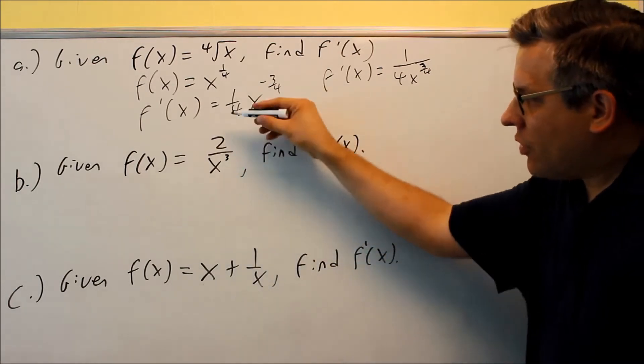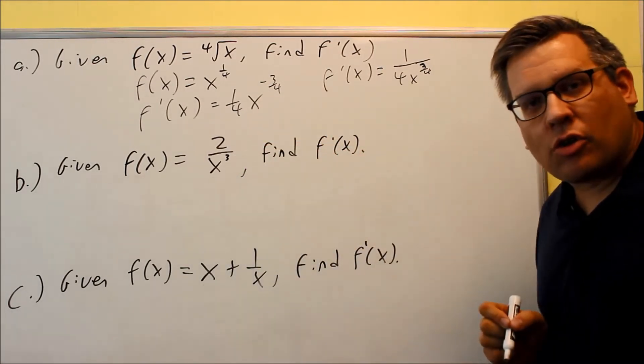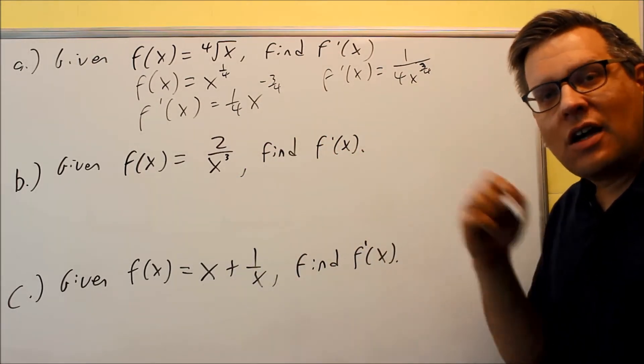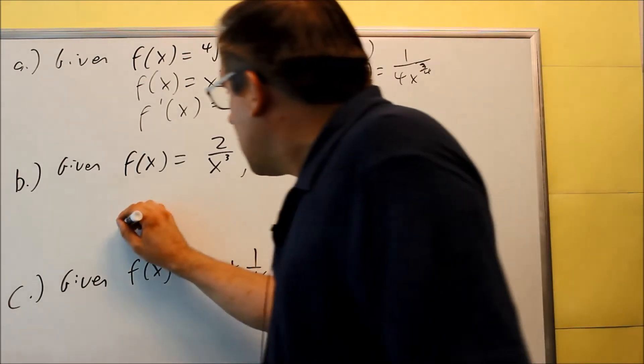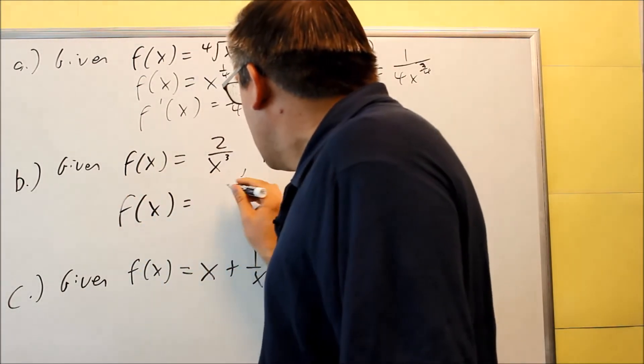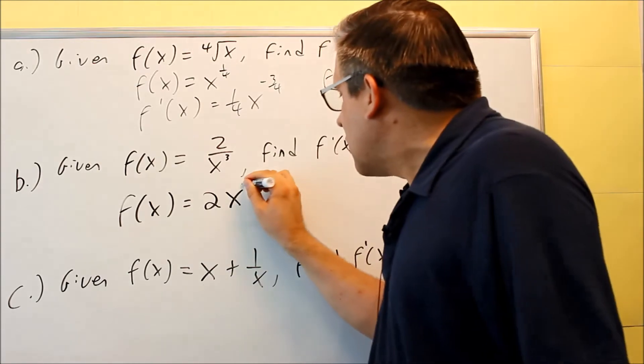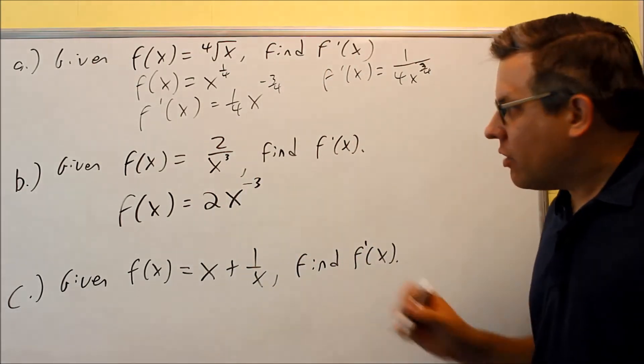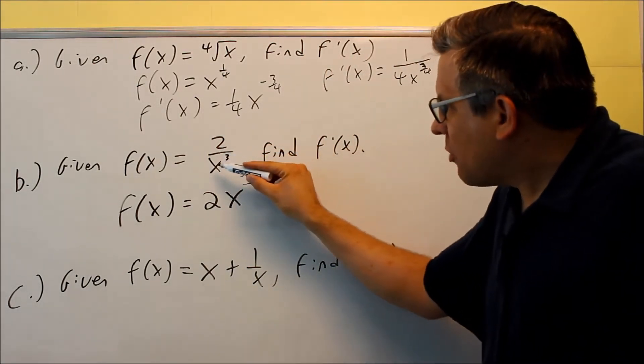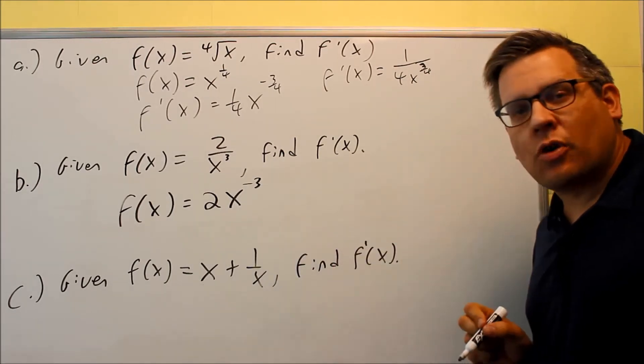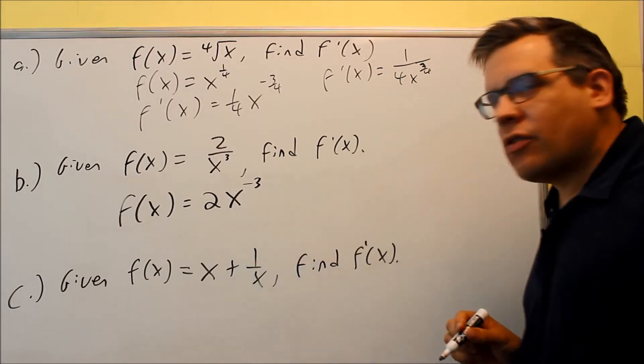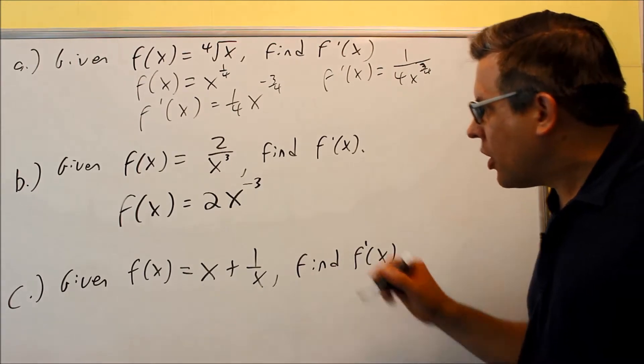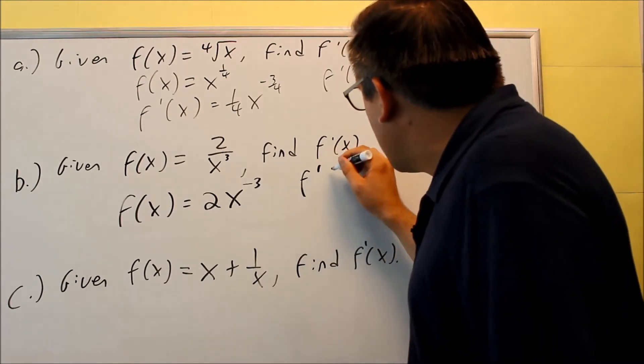Next, if you have this kind of power here, the x is down below, you want to change it into a negative power. So first, we're going to rewrite this as 2x to the negative 3. This is down below, so any time you bring something across the division bar, it changes the sign of the exponent. So I have 2x to negative 3, we're going to take the derivative of that one, applying the power rule.